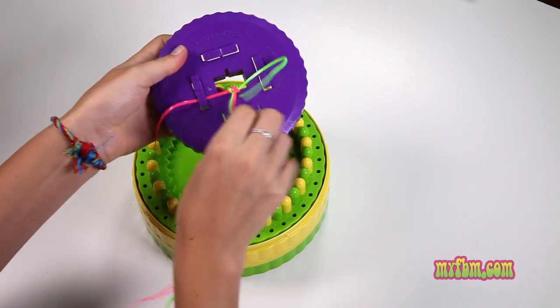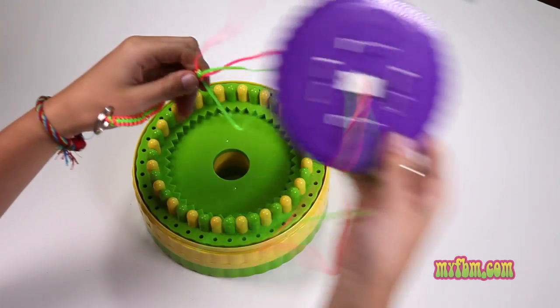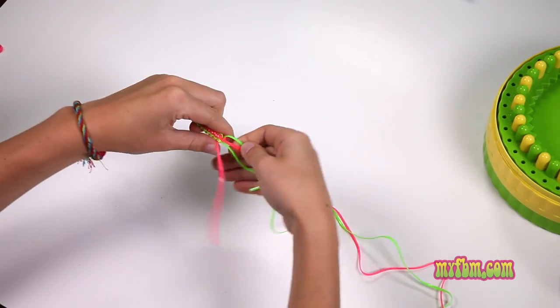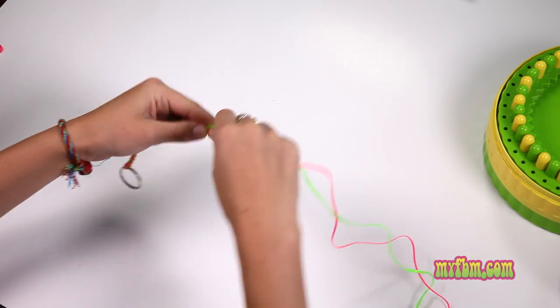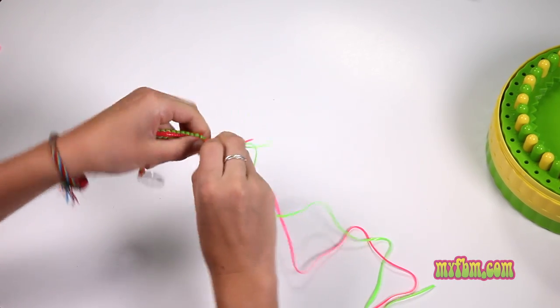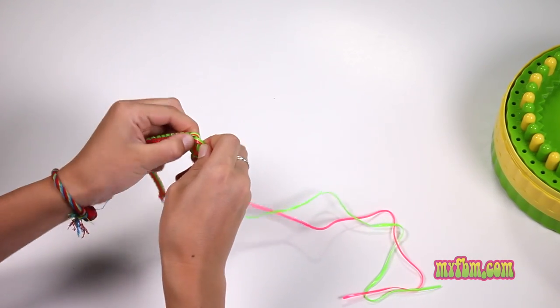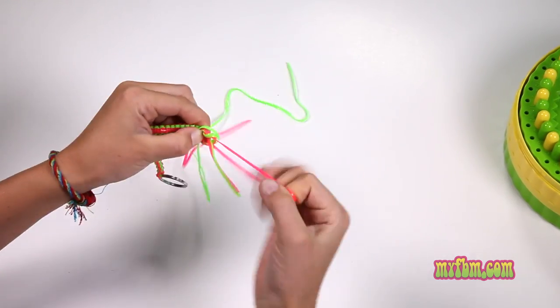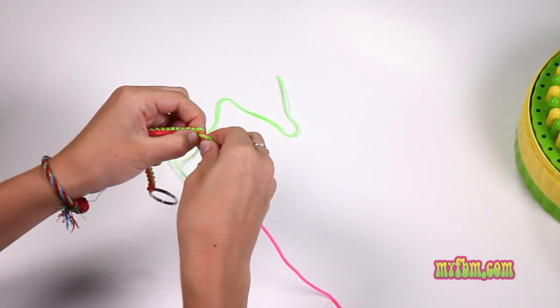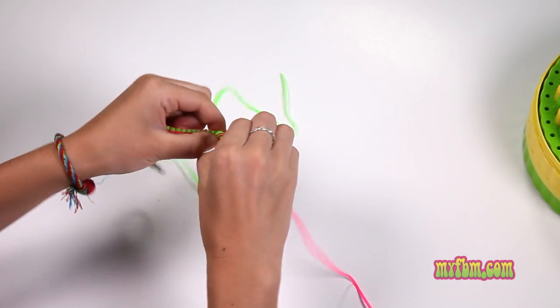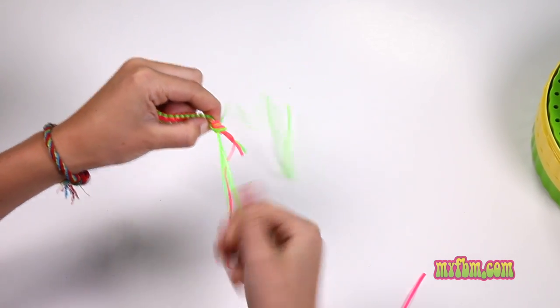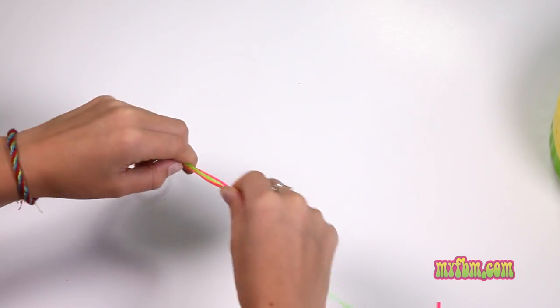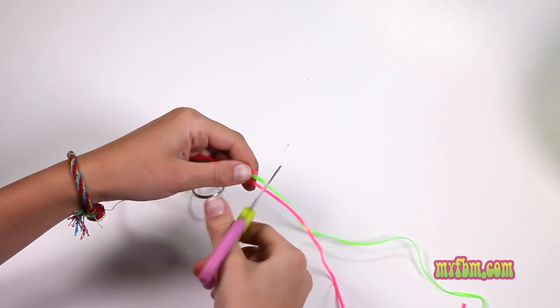Slide it through the middle. Take your extra strings at the end and tie a knot. Make sure all the strings come through. Then sometimes it's easier to cut them a little bit shorter.